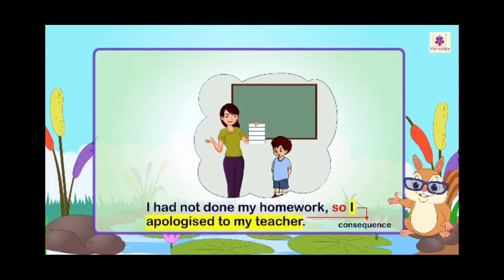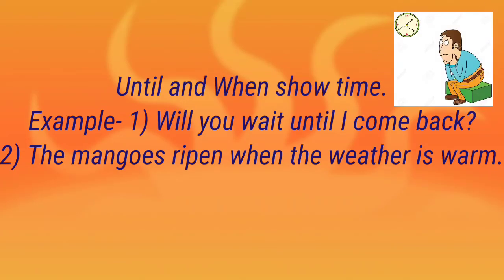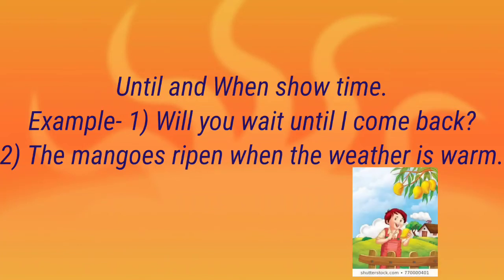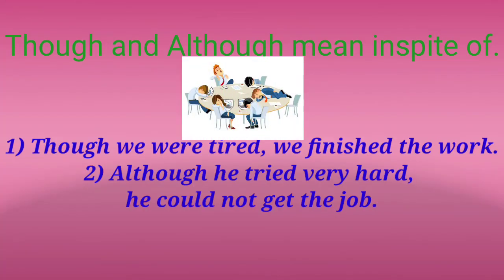Next is 'so.' 'So' shows consequence or result. Example: 'I had not done my homework, so I apologized to my teacher.' Why did you need to apologize? Because you had not done the homework. So 'so' shows result. 'Until' and 'when' show time. Example: 'Will you wait until I come back?' and 'Mangoes ripen when the weather is warm.'